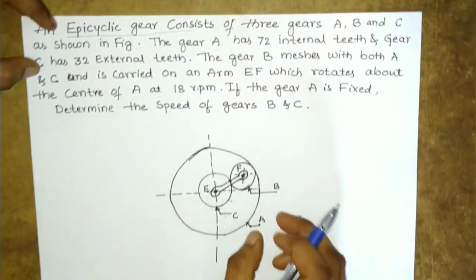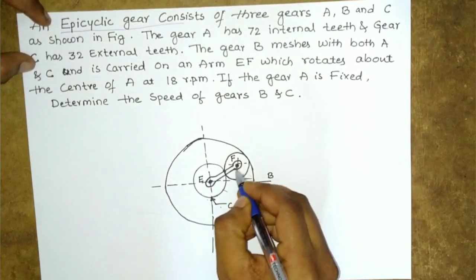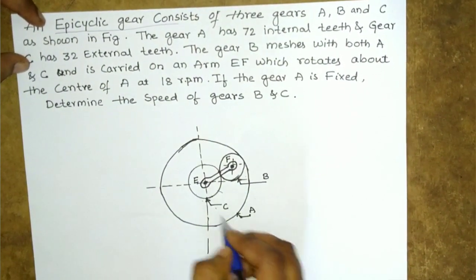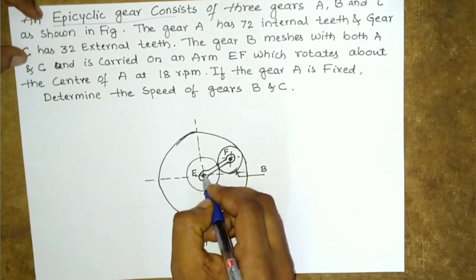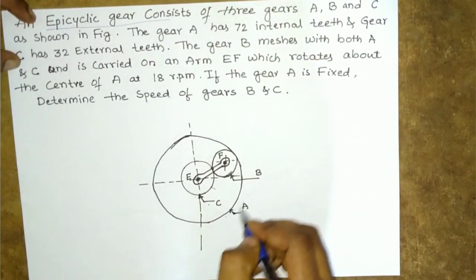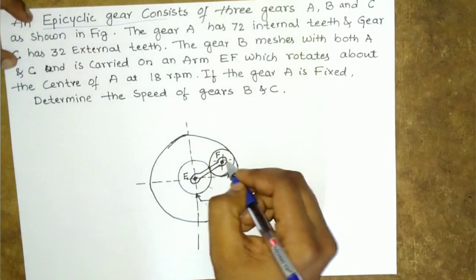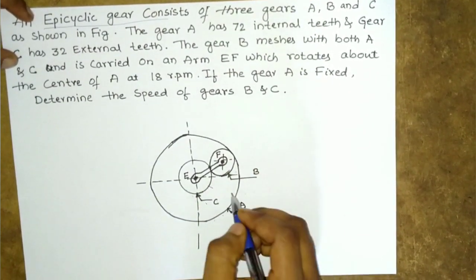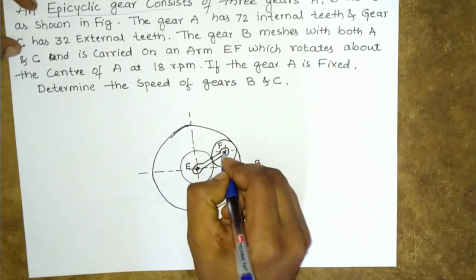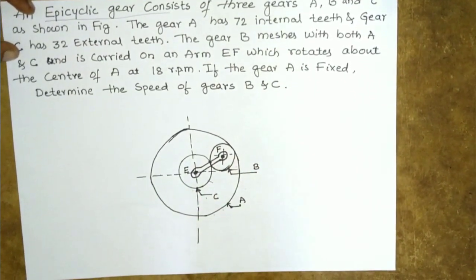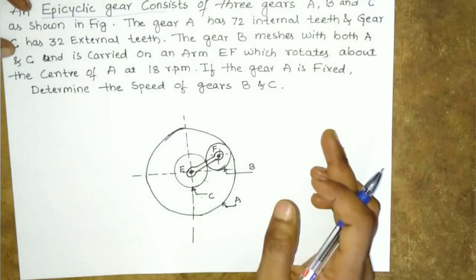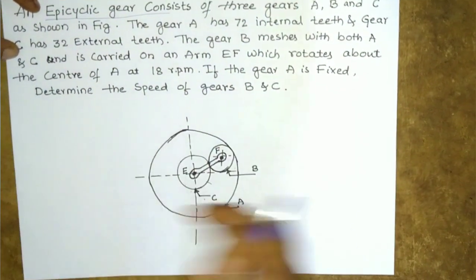In an epicyclic gear train, there are three shafts — one carrying gears A and C, one for gear B, and the arm shaft — and relative motion exists between the shafts. That is what makes it an epicyclic gear train.